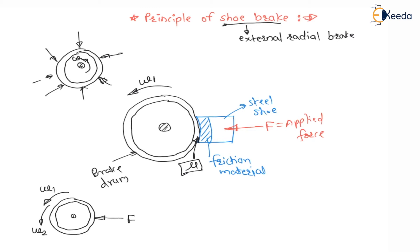Force F is applied on the brake drum. At the point of contact, this point is moving in the upward direction — that is the direction of motion — because it is moving in the anticlockwise direction. Therefore, the frictional force will be in the downward direction, which is nothing but mu·F. This is opposite to the motion. Mu·F is the friction force, opposite to the motion.